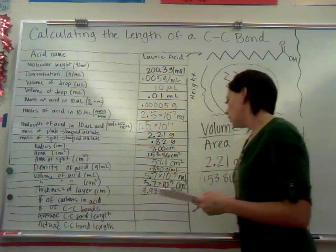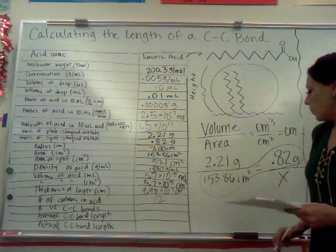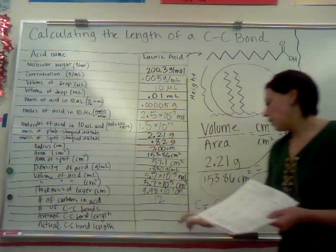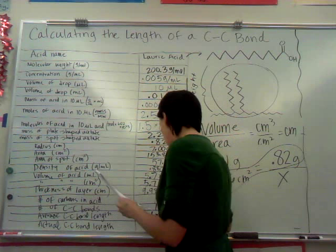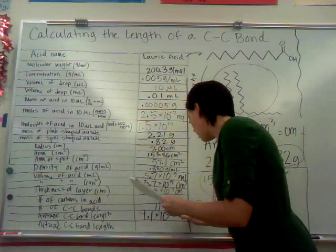Okay, and we talked about how in lauric acid there are 12 carbon atoms, which means there are 11 carbon-carbon bonds. So now we can take the thickness divided by the number of carbon-carbon bonds, and we can get our estimation for the length of a carbon-carbon bond, which I get to be 9.1 times 10 to the minus eighth centimeters.